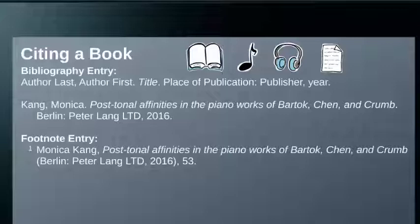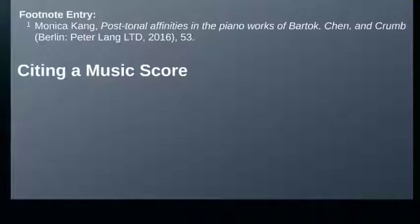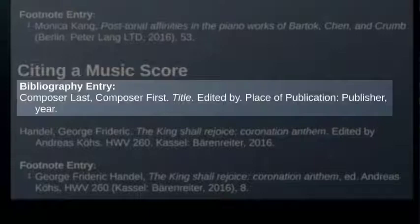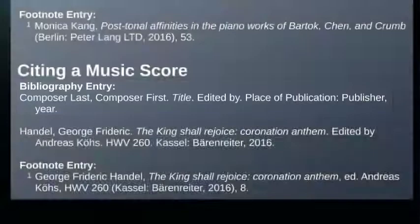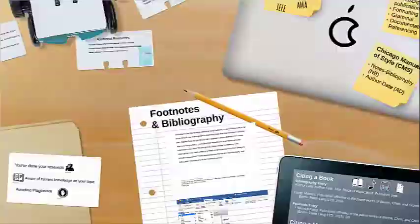A music score is cited in a very similar way to a book. Here we have the composer name, the title of the piece in italics, the editor, place of publication, publisher, and the year published. If there is a libretto, you will need to note this along with the editor information.